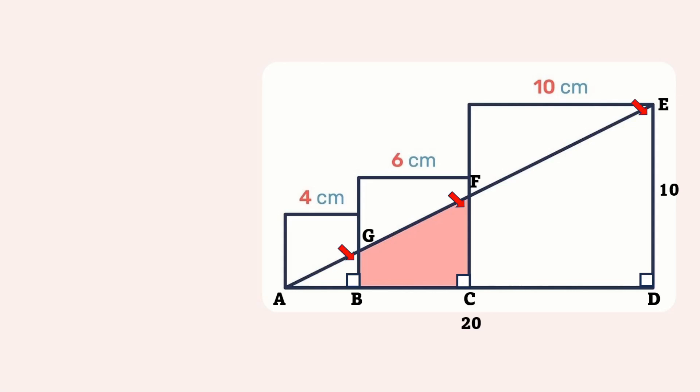But just showing that two angles are the same in all three triangles is enough to show that these are similar triangles. So triangle ABG is similar to triangle ACF, which is similar to triangle ADE. Since they are similar triangles, we can use the ratios of their corresponding sides.